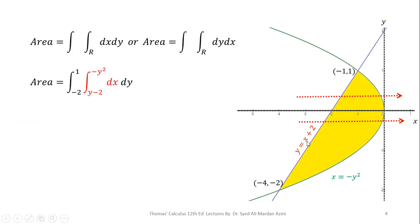Since we have selected x as the inner variable, the lower limit of x from the line boundary is y - 2, and the upper limit of x from the parabola boundary is -y². For the outer variable y, the region extends from y = -2 to y = 1 along the y-axis, so the limits of y are -2 to 1.